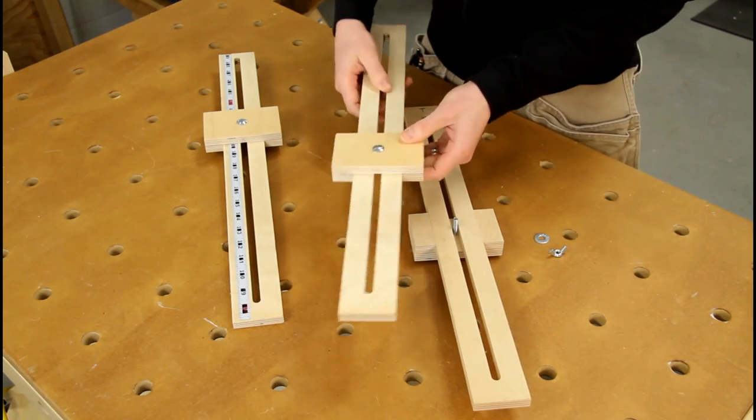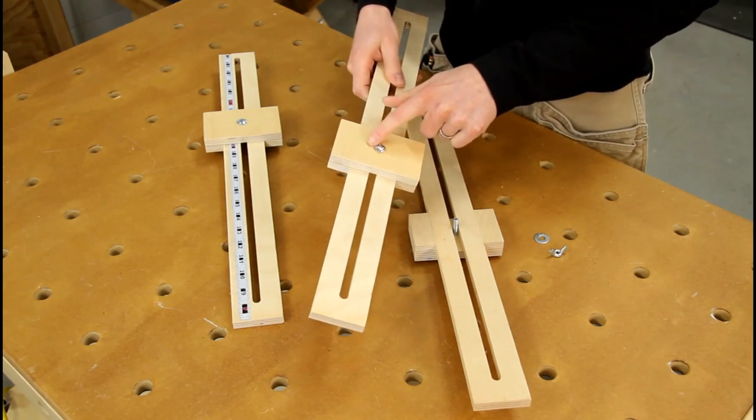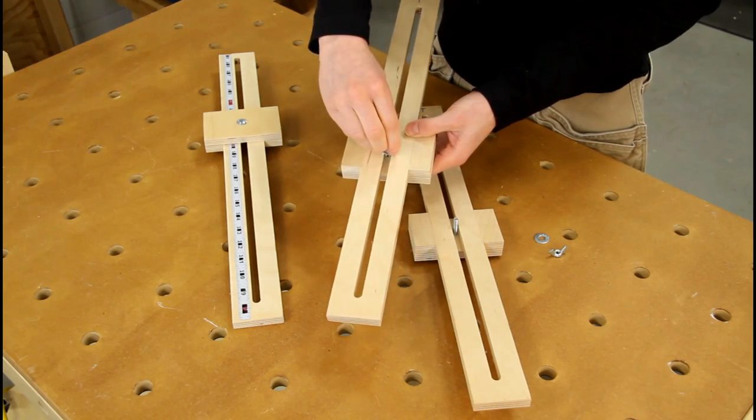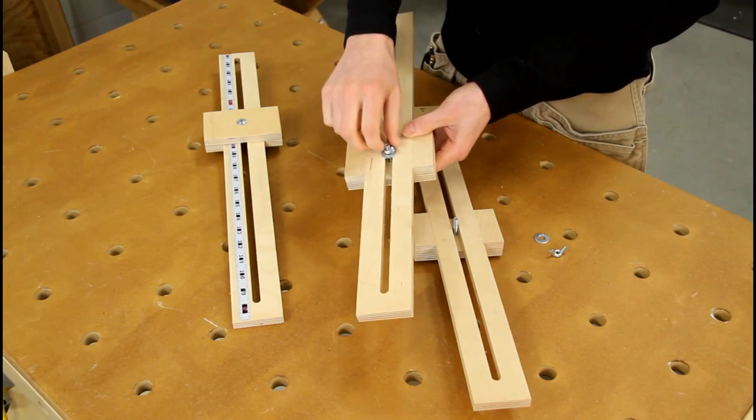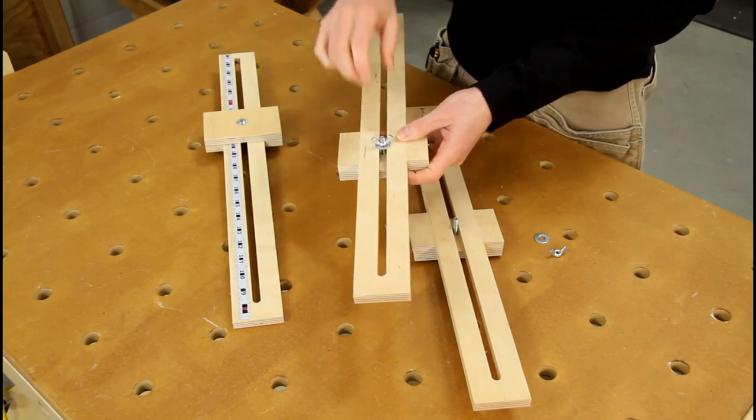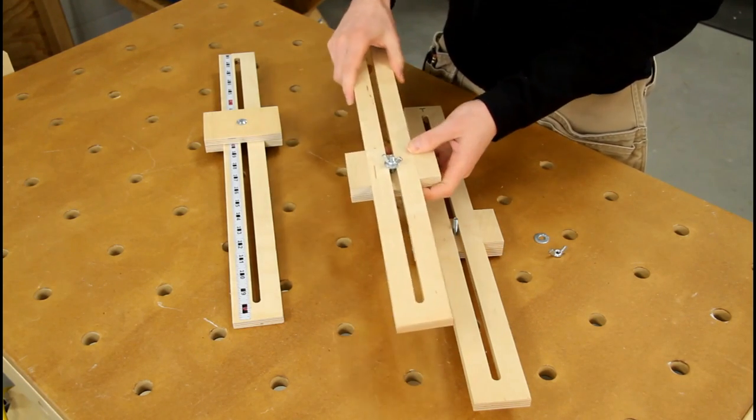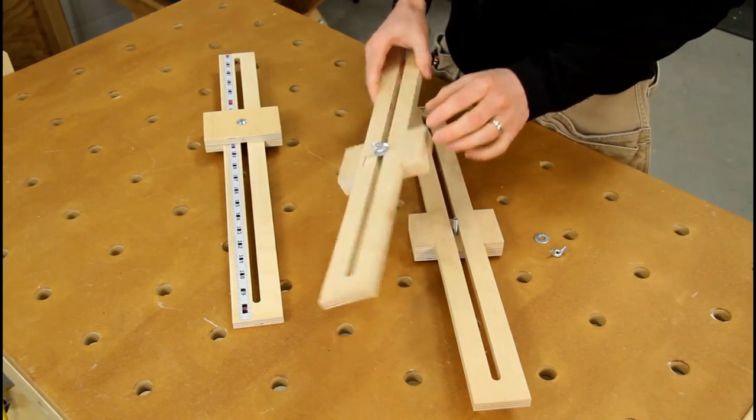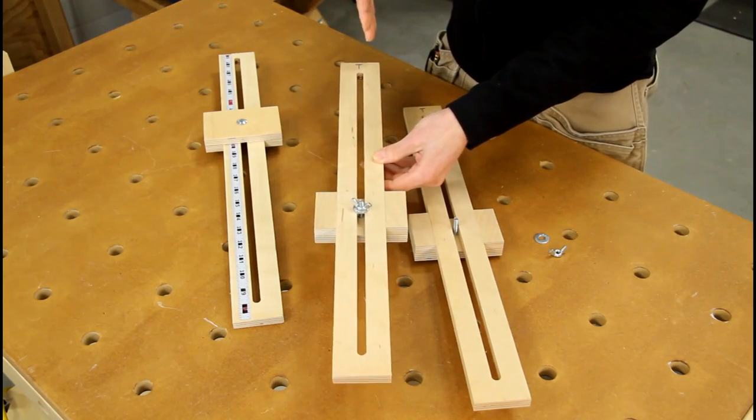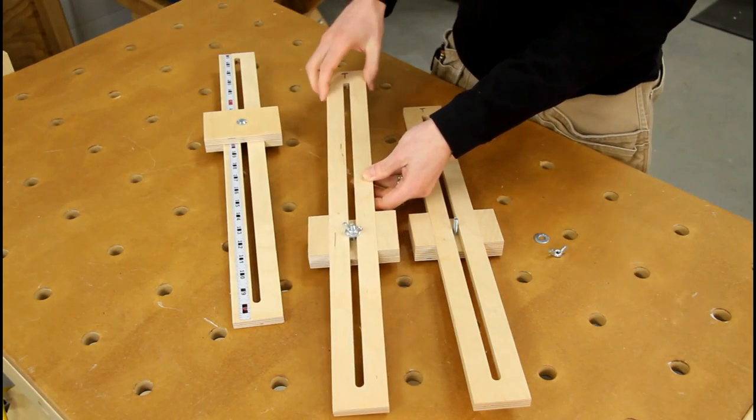So the stop block has a quarter-inch carriage bolt set into the back of it. That goes through the groove, and then is locked in place with just a washer and a wing nut, so it can be backed off, slid to wherever it needs to be, and then locked down. So it's nice and secure, and nice and accurate. Everything registers square, so that the bar is coming across to the track nice and square as well.